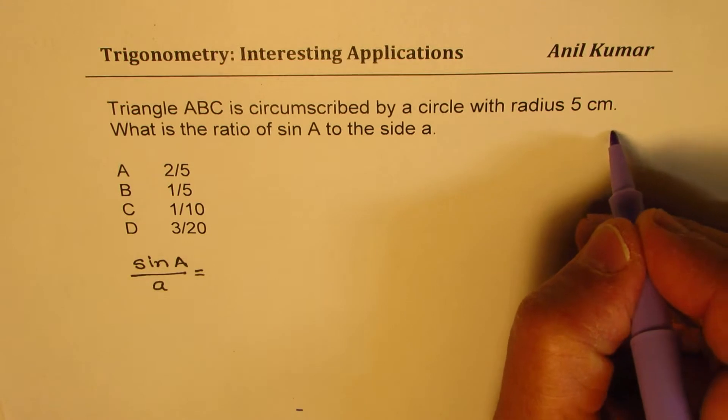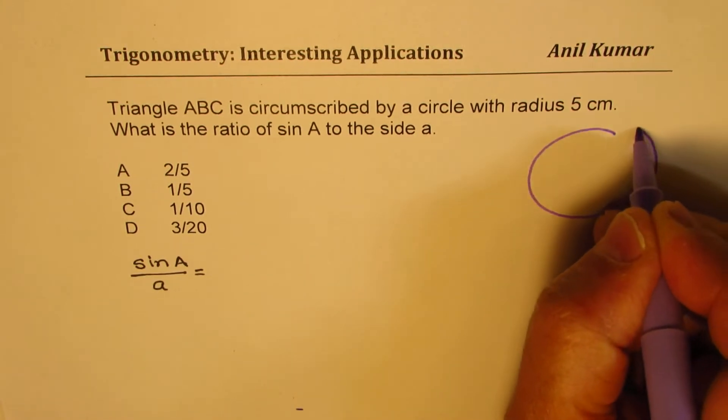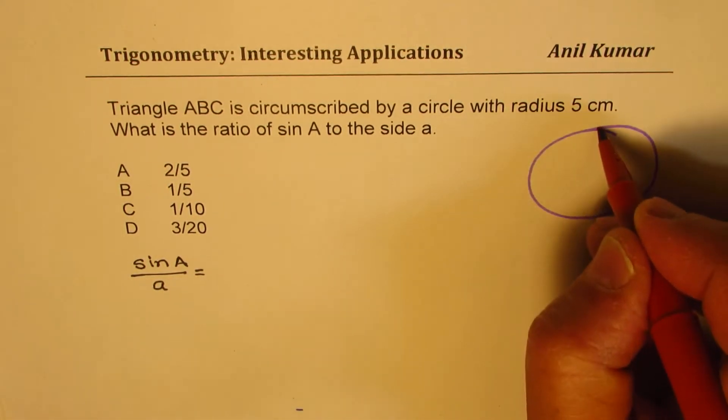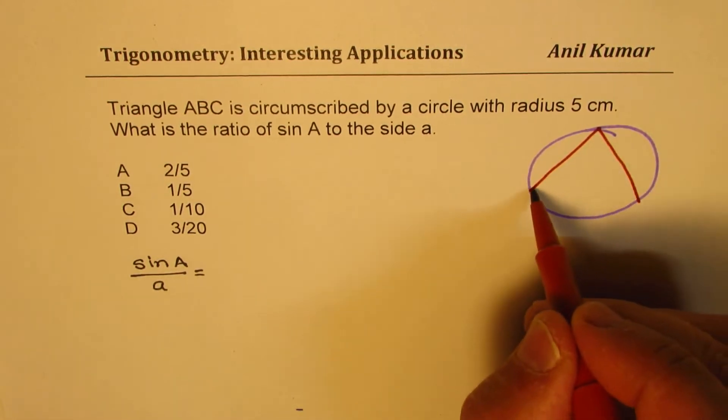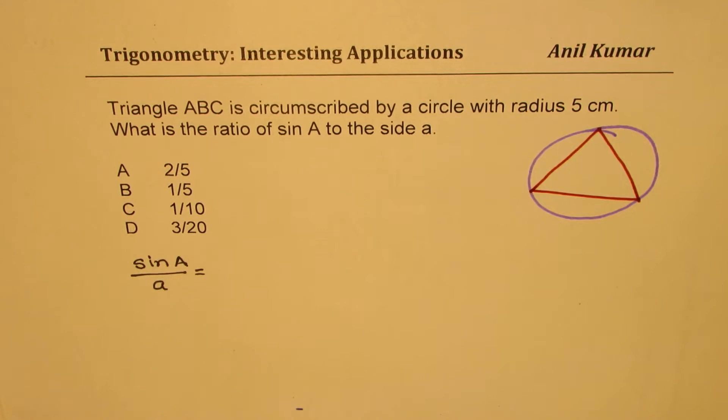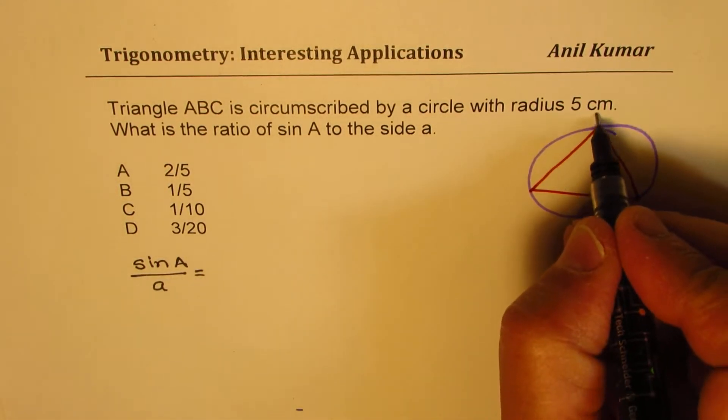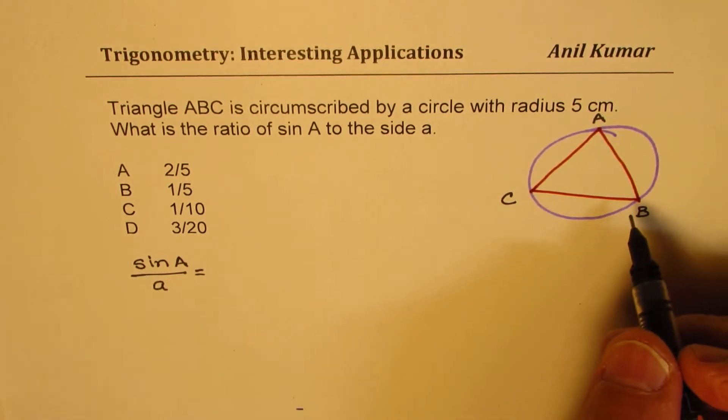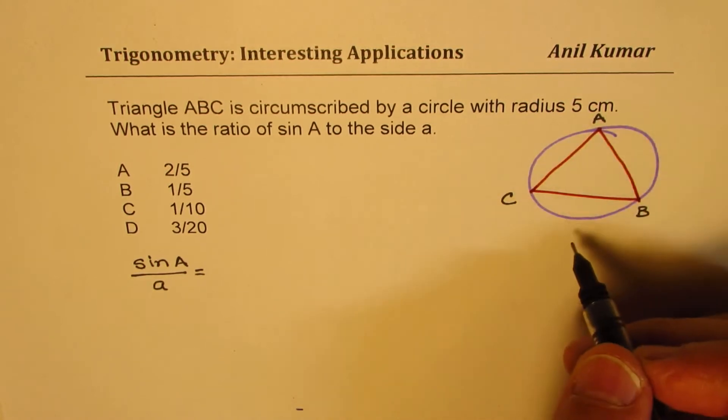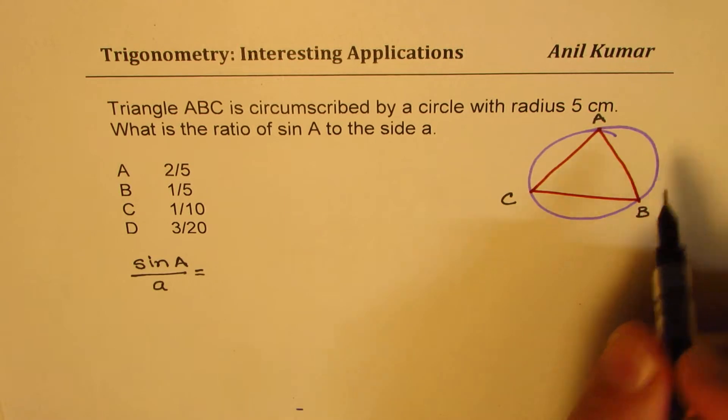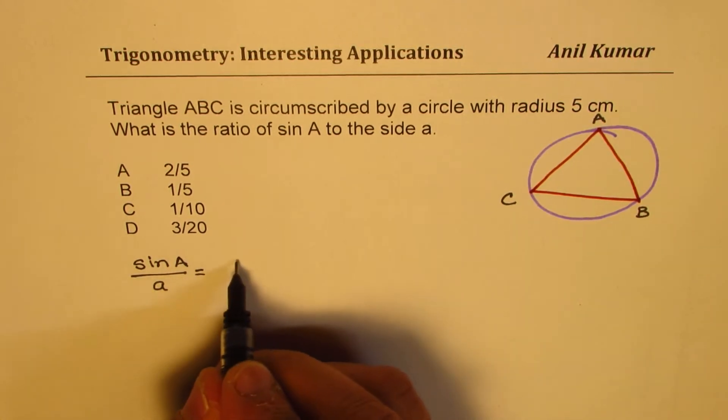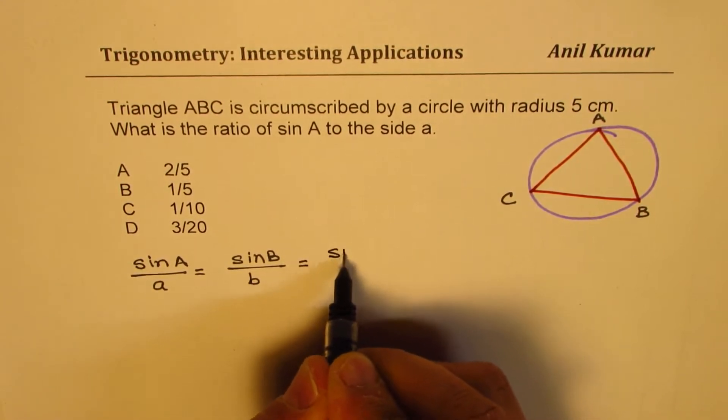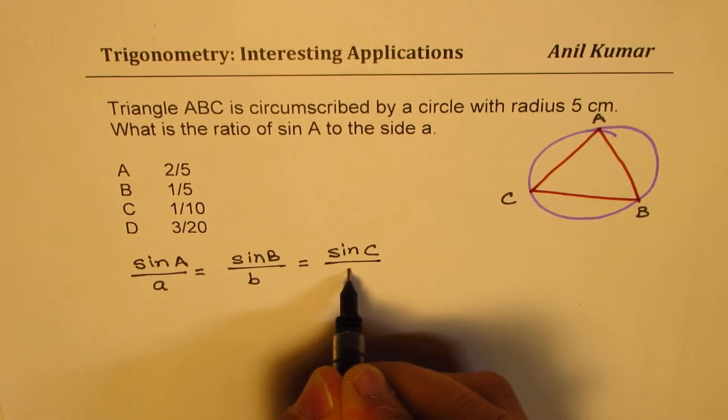So let's first sketch. We have a circle here and within this circle we have a triangle. Let me just randomly draw this triangle here with three vertices on this circle. Let's call them as A, B and C. So this is a triangle which is inscribed in a circle or circle is circumscribed. Now in this particular triangle we know that sine A over A is also equal to sine B over B and that is also equal to sine C over C. That is the sine law.